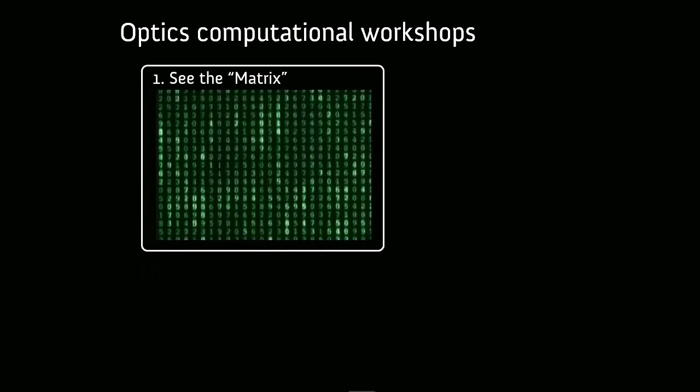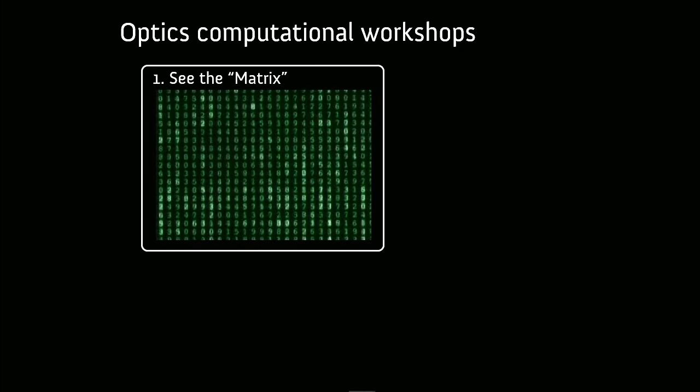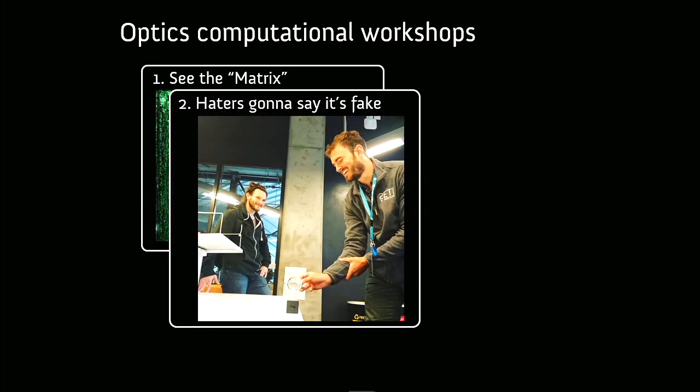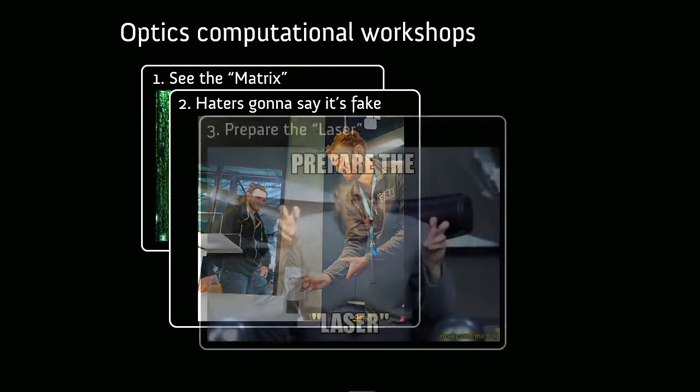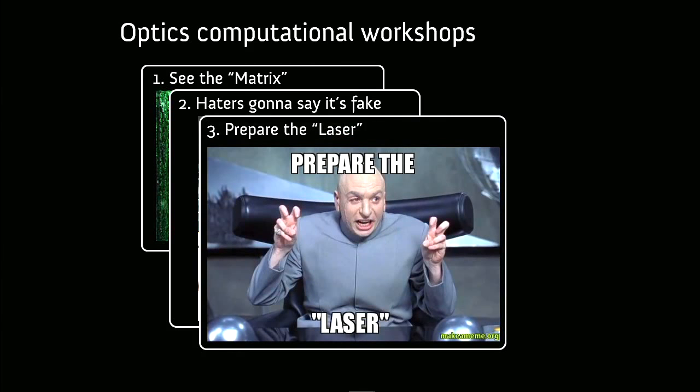So the computational workshops are as follows. For optics, the first one is called See the Matrix. Hopefully, we'll go from that to this. The next one is Haters going to say it's fake, or Haters going to say it's Photoshop, where you'll simulate a cloaking device made of four lenses. And we'll actually bring this cloaking device in, here demonstrated by Stalker Space heartthrob Chris Watkins and Seb Temponi, who you may have had as a lab demonstrator. And here, Chris is actually holding a donut within this four-lens objective, and you can actually see straight through the donut, not just because donuts have holes in them, but the donut has actually disappeared. And you'll simulate how this cloaking device works in the second computational workshop for optics. And finally, the last computational workshop of the semester is called Prepare the Laser, because you'll simulate laser propagation and how to actually measure a laser beam waist from real data that I took in my lab.